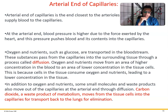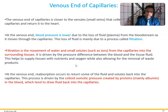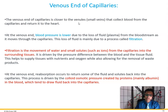In addition to oxygen and nutrients, some small molecules and waste products also move out of the capillaries at the arterial end through diffusion. Carbon dioxide, a waste product of metabolism, moves from the tissue cells into the capillaries for transport back to the lungs — since there's a higher concentration of carbon dioxide in the tissues, diffusion moves it from high to low concentration, picking it up and returning it to the heart and lungs to be oxygenated. At the venous end of the capillaries, closer to the venule, blood pressure is lower due to the loss of fluid plasma as blood moves through the capillaries.